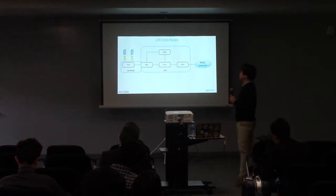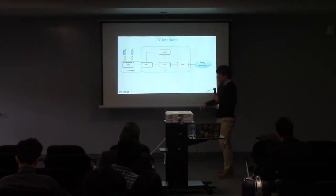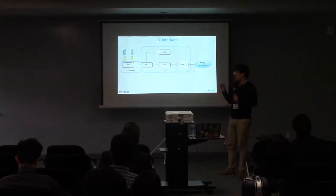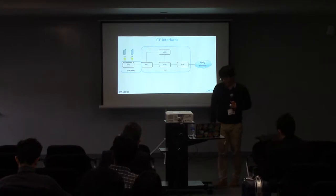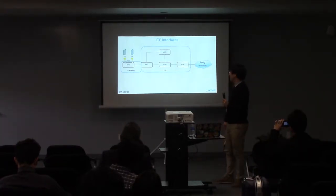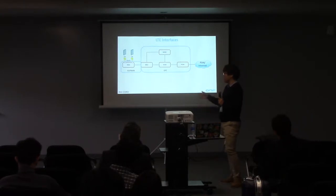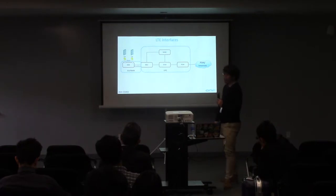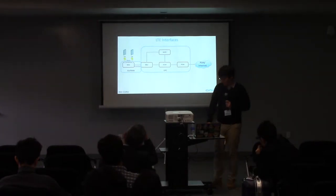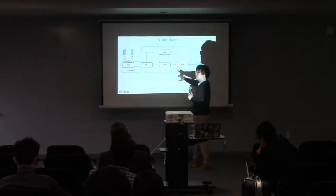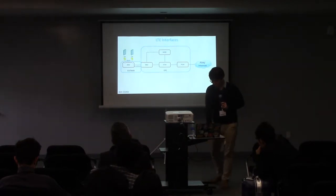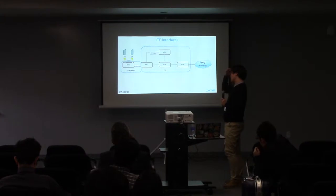Let's go back to the previous figure. There are two parts, and in order to communicate between virtual network functions, we should define the interface in U-Trend. For UE and RRH we use the radio interface, and for RRH and BBU we should define the fronthaul, but that is outside the mCORD part. So in the mCORD part, we define five interfaces. For BBU and MME, the LTE specification already defined those five interfaces.